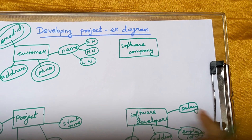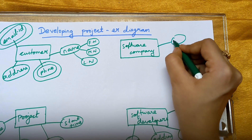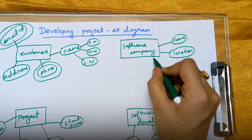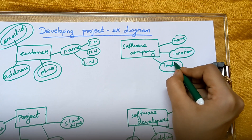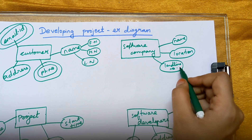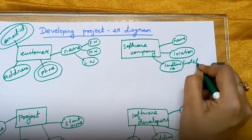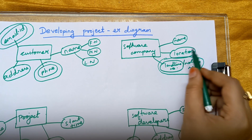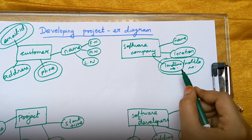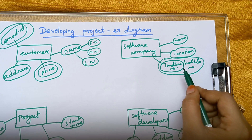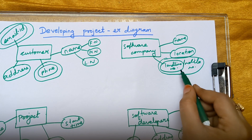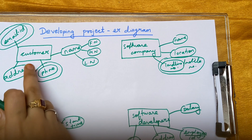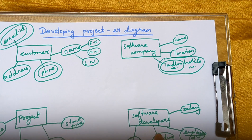Next let us look at the attributes of software company. First is the name of the software company. Next is the location of the software company. Next is the landline or mobile number of the software company, which must be written inside a double oval — because the company can have more than one number, so it is a multi-value attribute. These are all the attributes of the four entities: customer, software company, project, and software developer.